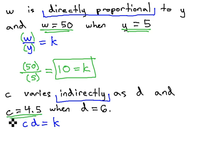We're told that c equals 4.5 when d equals 6. So, we'll replace the c with 4.5 and we'll replace the d with 6 and that will equal our constant. Simply multiplying 6 times 4.5, we get 27.